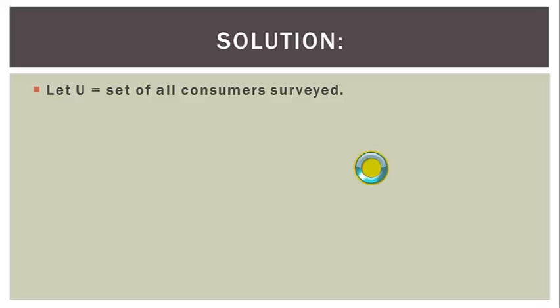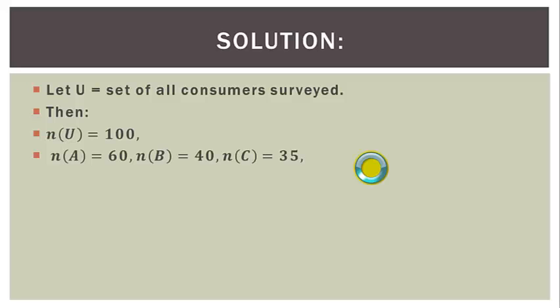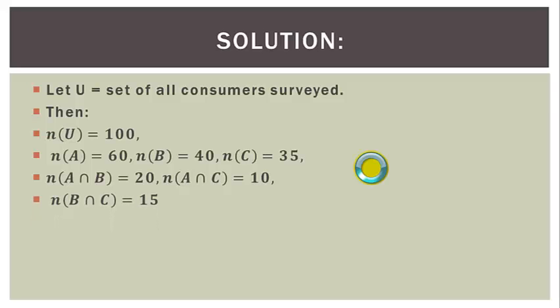Solution: Let U be the set of all consumers surveyed. |U|=100, |A|=60, |B|=40, |C|=35, |A∩B|=20, |A∩C|=10, |B∩C|=15. Since all consumers like at least one product, |U|=|A∪B∪C|. Let us represent this in a Venn diagram with three intersecting subsets A, B, and C.